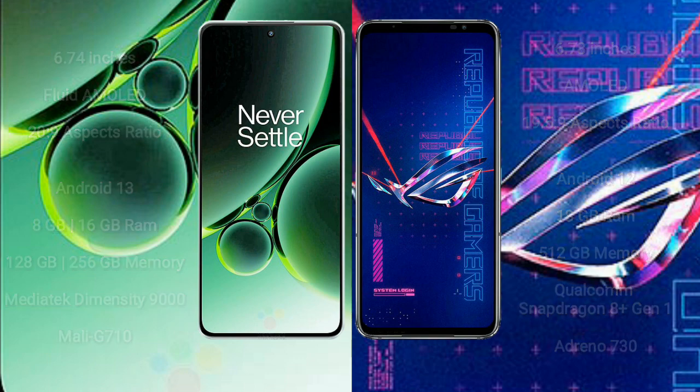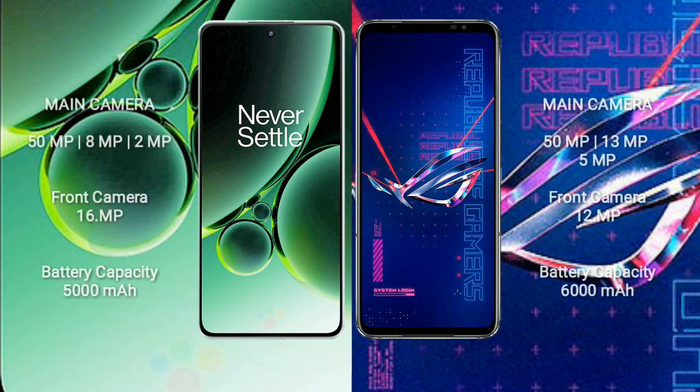OnePlus Nord 3 has a rear triple camera setup of 50MP plus 8MP plus 2MP, and a front camera of 16MP. Asus ROG Phone 6 Pro comes with a rear triple camera setup of 50MP plus 13MP plus 5MP, and a front camera of 12MP.